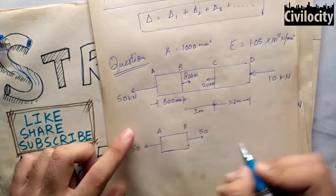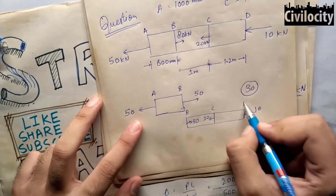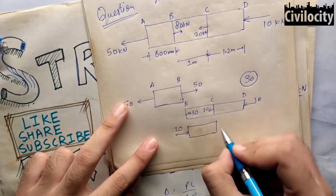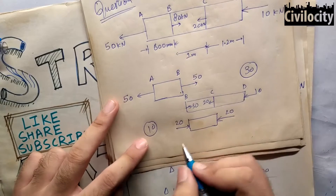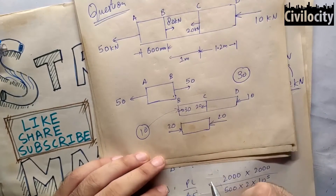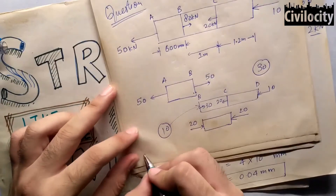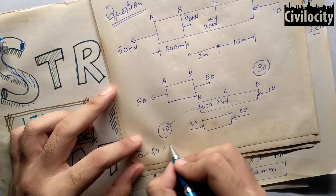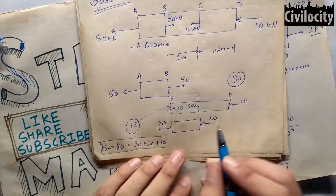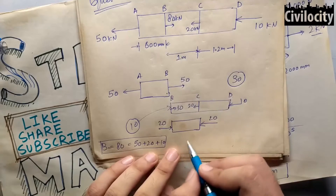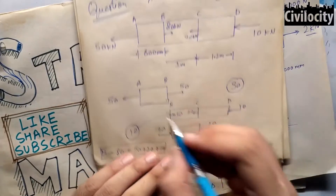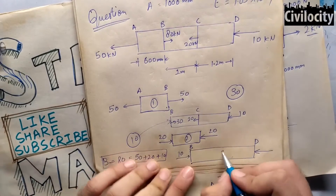Section B has 30 kN, section C has 20 kN and D has 10 kN. The internal force in BC is 30 kN compressive and in CD it is 20 kN compressive. Analyzing further, section BD has 10 kN at both B and D, so the BD section carries a 10 kN compressive force. This gives us three sections: AB with 50 kN tensile, BC with 20 kN compressive, and BD with 10 kN compressive.